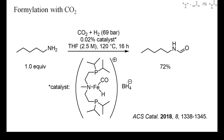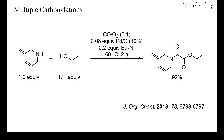A further precursor of carbon monoxide is carbon dioxide. Hydrogenation of the latter in the presence of amines can lead to the formation of formamides, as in this example. The reaction temperature was quite high, but only 0.02% of an iron-based catalyst was sufficient to obtain a good yield of formamide.